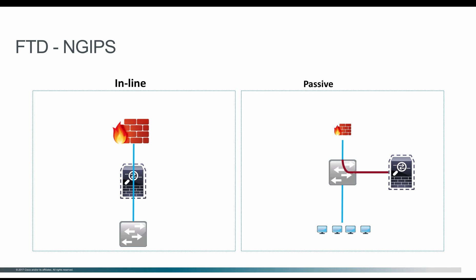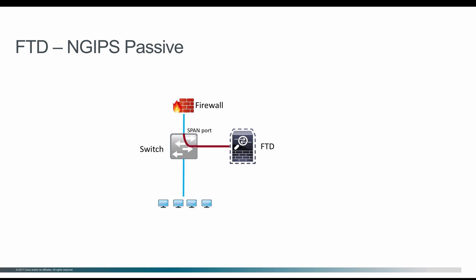The main difference between inline and passive is that with inline you are able to block attacks or reset connections found to be abnormal. In passive mode, you cannot block or reset connections, but it will give a complete report of any abnormal activity happening within the traffic. When deployed as a passive interface, a SPAN port on the switch sends copies of all packets to the Firepower Threat Defense.